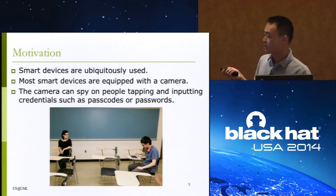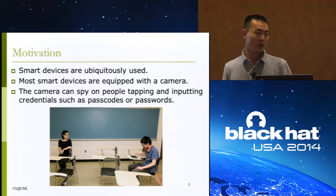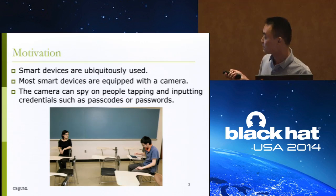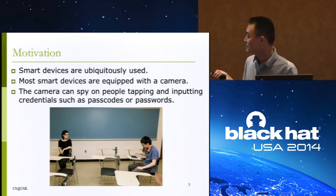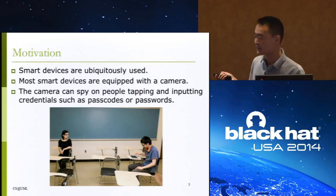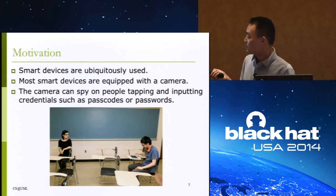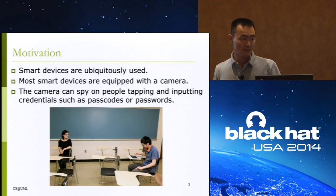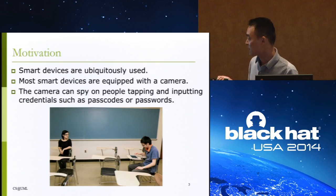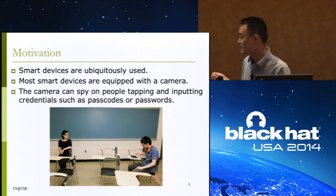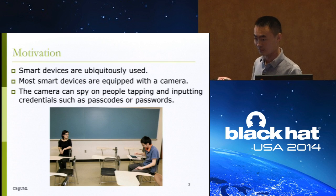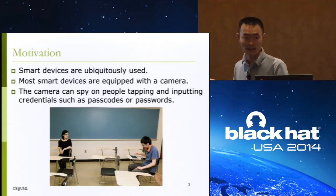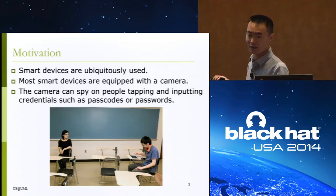Nowadays, smart devices are ubiquitously used, and most devices are equipped with a camera. This camera can spy on people typing and inputting sensitive information, such as your passcode. By analyzing the video taken by such smart devices, we can retrieve your passcode. This picture shows one possible scenario: in the classroom, the girl wears the Google Glass, turns around, and spies on the boy in the back row typing his iPad passcode. By analyzing the video taken by the Google Glass, the girl can obtain the boy's iPad passcode.